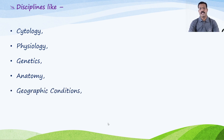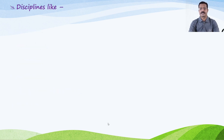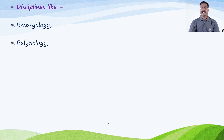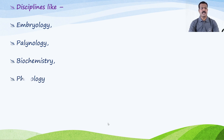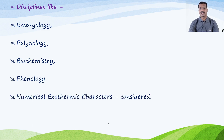Geographic conditions, ecology and its various parameters are also taken into consideration, as well as embryology, palynology, biochemistry, phenology, and numerical taxonomic characters — all are taken into consideration while classifying plants.